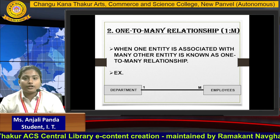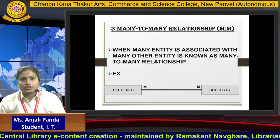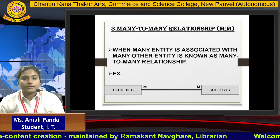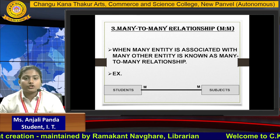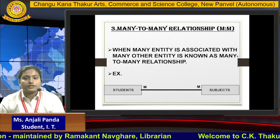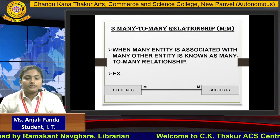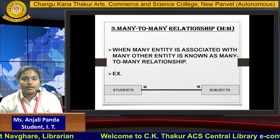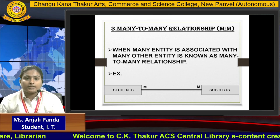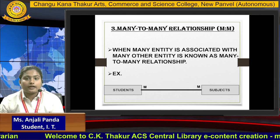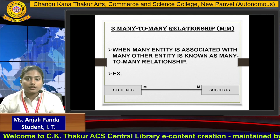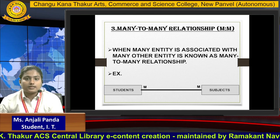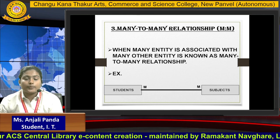Third is many-to-many relationship. When many entities are associated with many other entities, it is called a many-to-many relationship. For example, students and subjects — many students have many subjects. Students are one entity and subjects are also an entity, so many students are associated with their subjects. This is an example of many-to-many relationship.